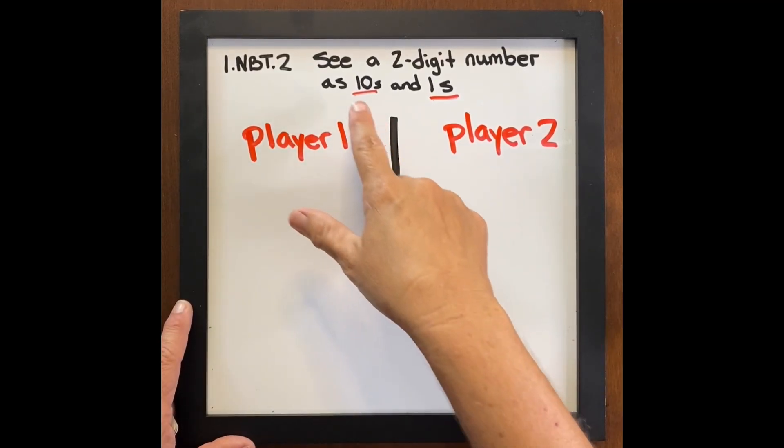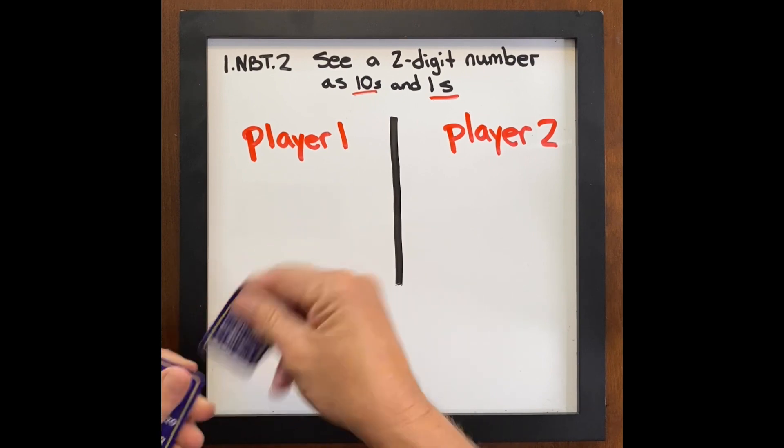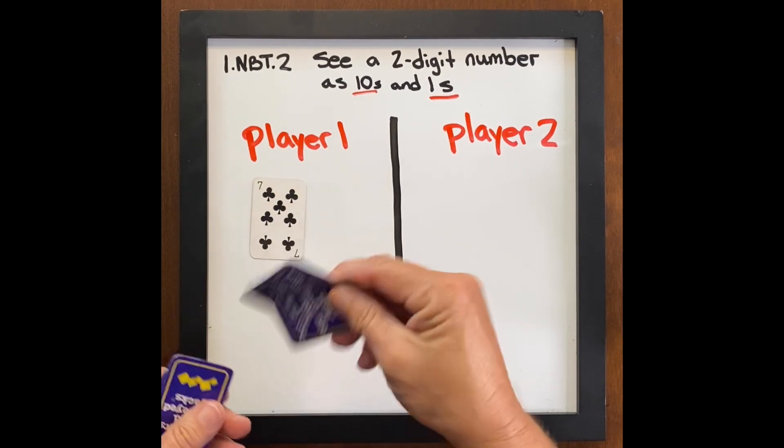To grow and build practice with seeing a two-digit number as tens and ones, we're going to play a game called Place Value Face-Off.